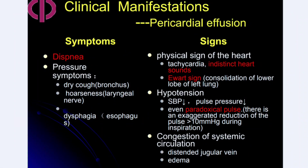In Stage 2, the pericardial effusion stage, symptoms include dyspnea and dry cough — caused by the effusion compressing the bronchus — and hoarseness when the recurrent laryngeal nerve is involved. Dysphagia occurs when the esophagus is compressed. Signs include tachycardia, indistinct heart sounds, Ewart's sign (consolidation of the lower lobe of the left lung), hypotension, reduced pulse pressure, and pulsus paradoxus — defined as an exaggerated reduction in blood pressure of more than 10 mmHg during inspiration.